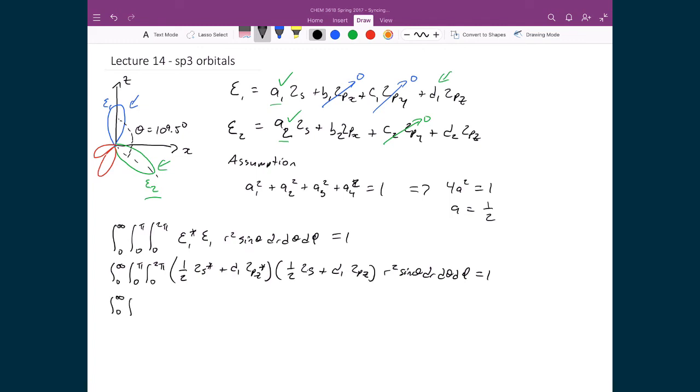I'll foil out these terms. Integral between 0 and infinity, integral of 0 to pi, integral of 0 to 2 pi. I'm going to get 1 quarter 2s star times 2s plus 1 half d1, 2s star, 2pz, plus d1 over 2, 2pz star, 2s plus d1 squared, 2pz star, 2pz. And that's multiplied by r squared, sin theta, dr, d theta, d phi. And that's equal to 1.